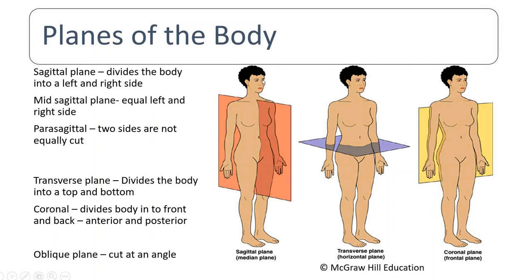In the sagittal plane, there is something called the mid-sagittal plane and the parasagittal plane. The mid-sagittal plane means if you divide the body equally into two parts — left and right. Parasagittal means if you cut off-center, so the two sides are not equally divided. You can always pause this video and take notes. Anatomy is very easy!